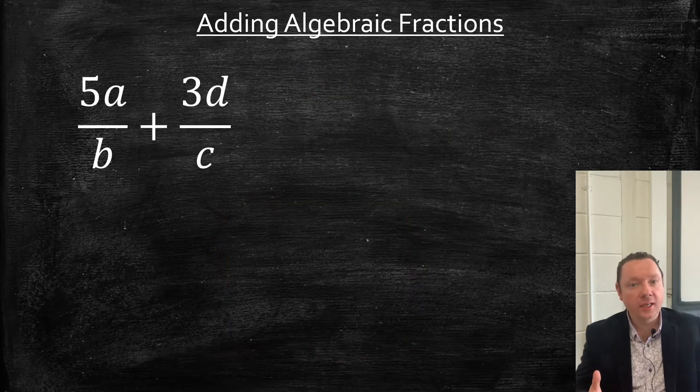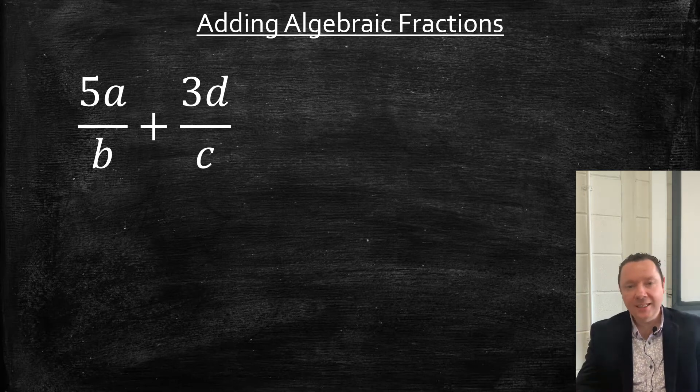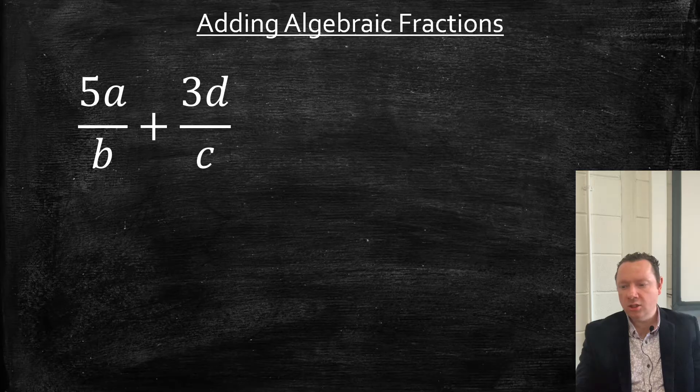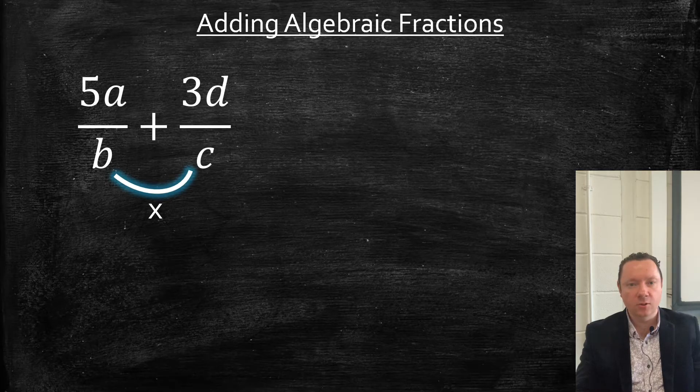Adding fractions or takeaway. When you're adding, you're looking for a common denominator. Easiest way to get common denominator algebraic fractions, if it's just two of them, just times them together. So your common denominator is b times c, bc.